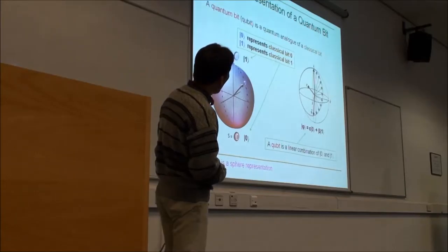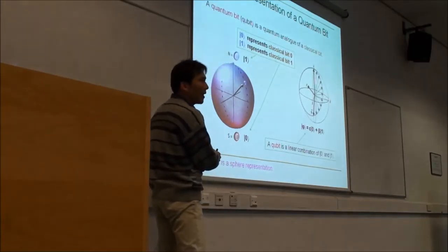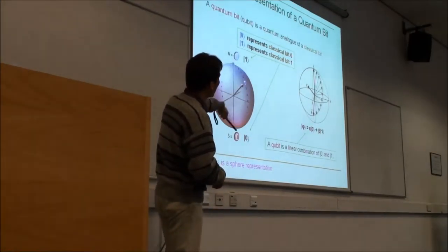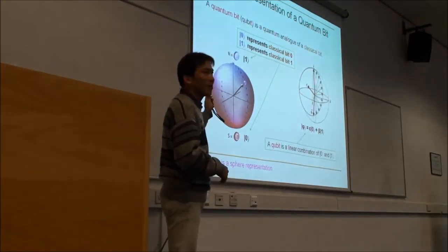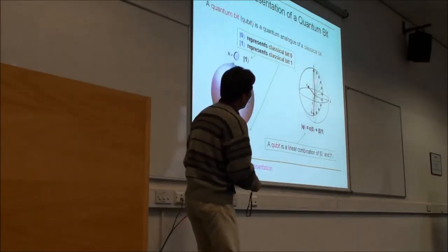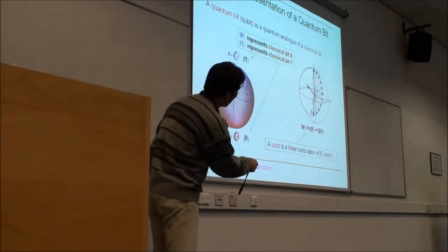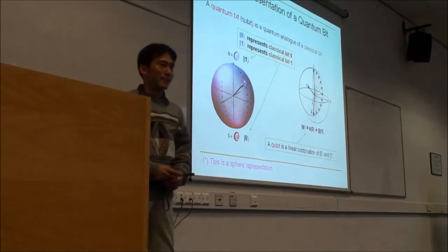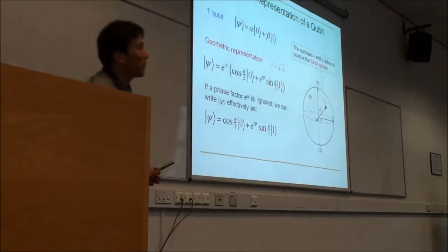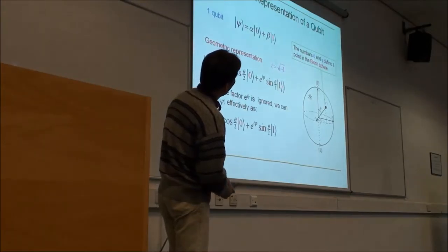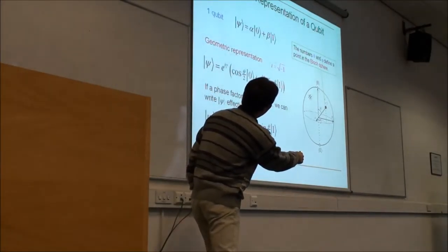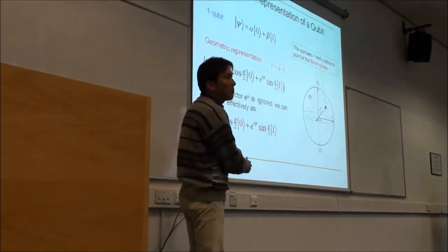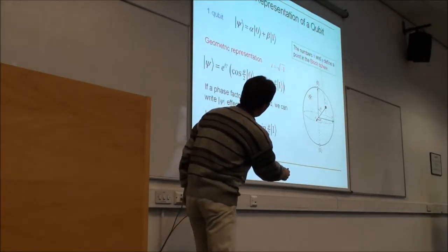Think about this quantum particle — the spin can be projecting in infinitely many possible directions between 0 and 1. The quantum state is the linear combination of 0 and 1. If you're familiar with the Bloch sphere representation, 0 is here and 1 is here, and these points can be represented on it. If the angle is theta and phi, then we have the full representation.